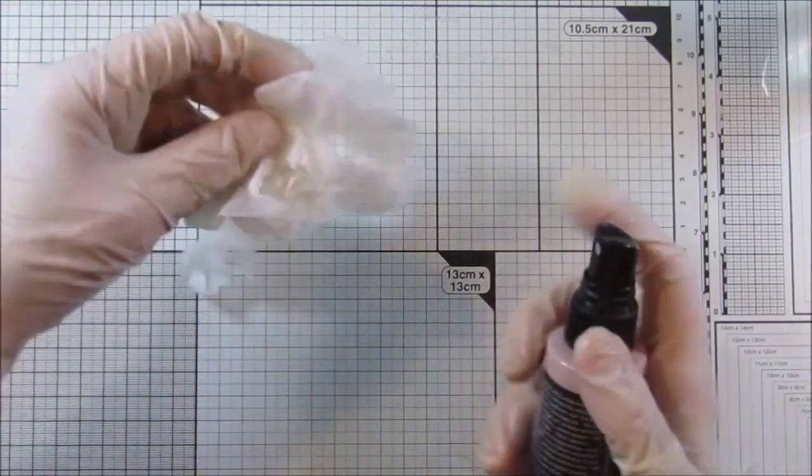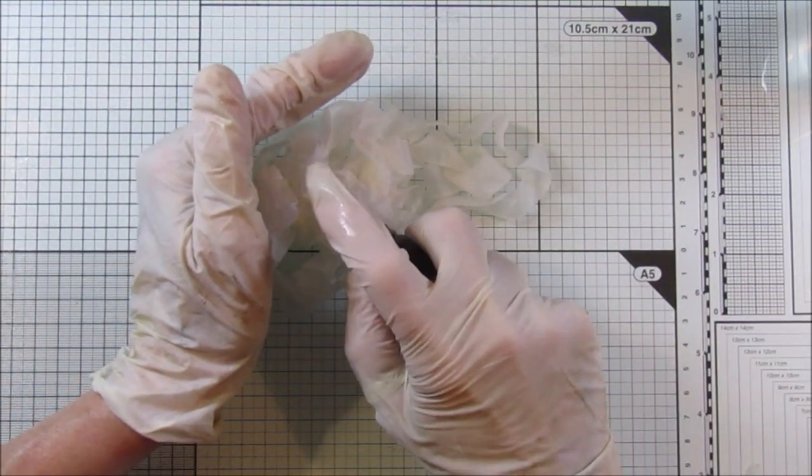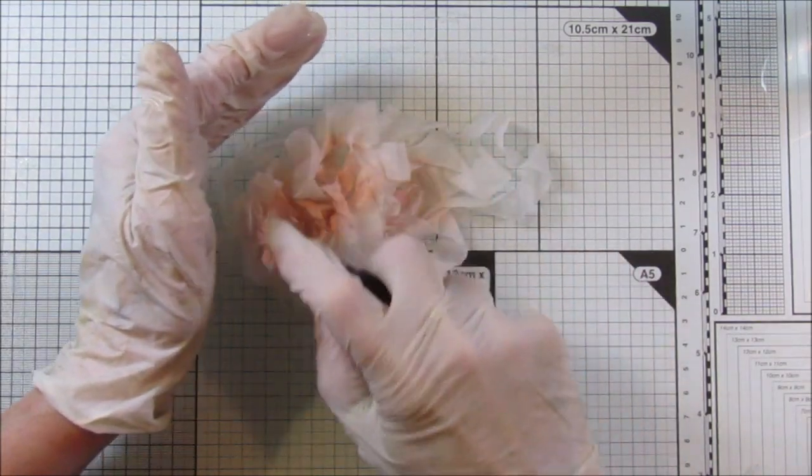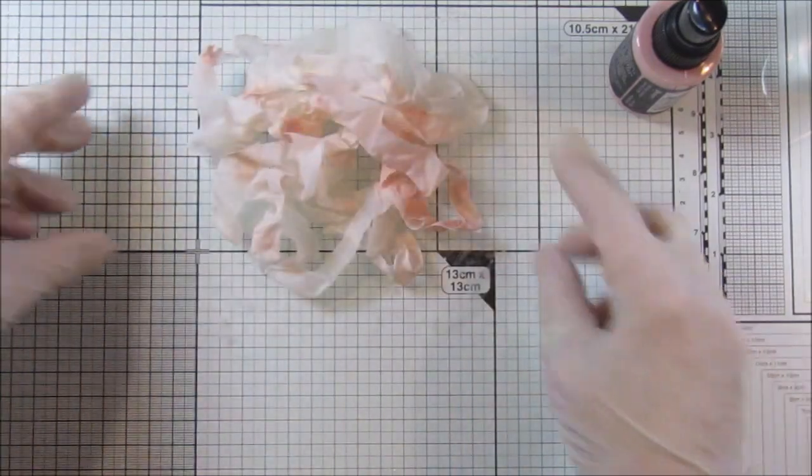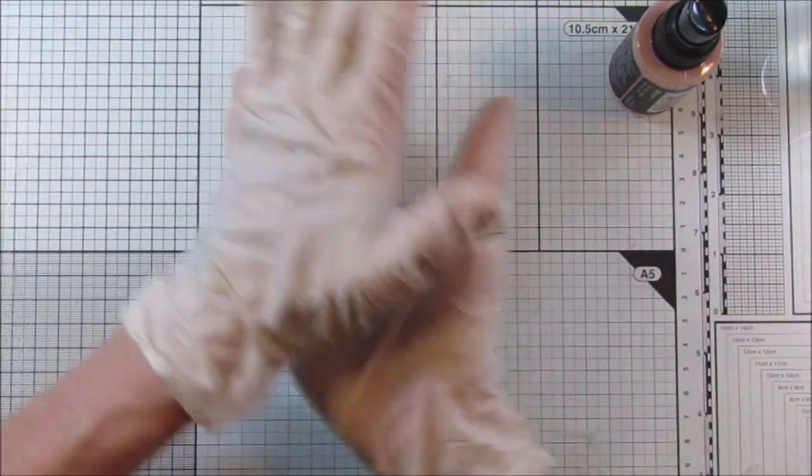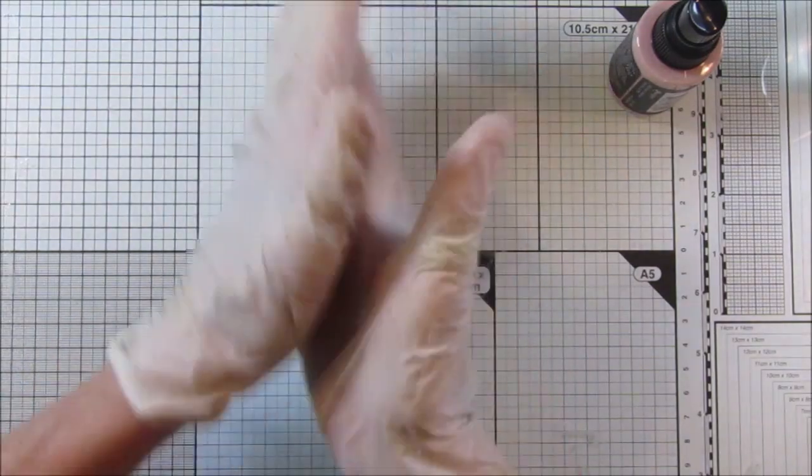So I've just wet that. Now I'm going to take a little bit of this and spray it. Now these do make a bit of a mess when you spray them. So I'm going to put a bit on there like that, and I just roll it in my hands. That's why I've got some gloves on.